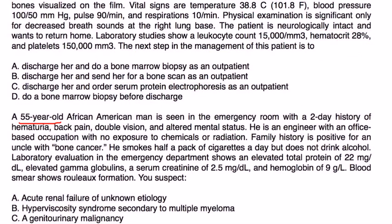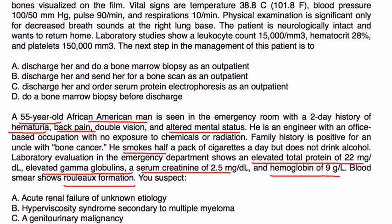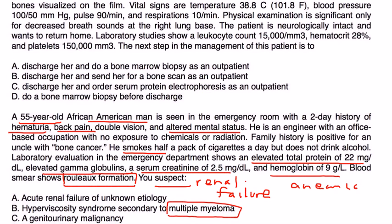Finally: A 55-year-old African-American man presents with two-day history of hematuria, back pain, double vision, and altered mental status. Family history positive for an uncle with bone cancer. Labs show elevated total protein, elevated gamma globulins, serum creatinine of 2.5, and hemoglobin of 9. Blood smear shows Rouleau formation. With anemia, renal failure, and classic Rouleau formation, a suspicion of multiple myeloma should definitely be present.